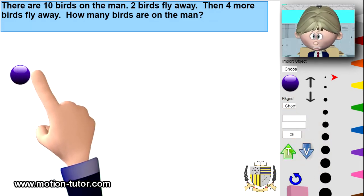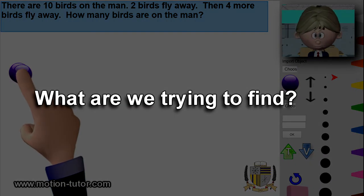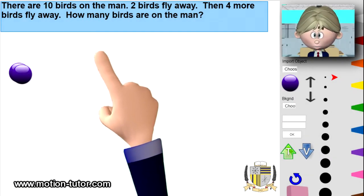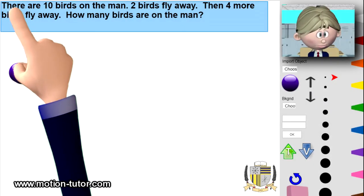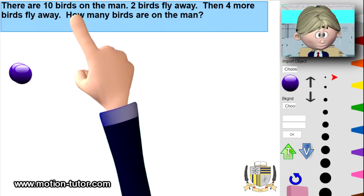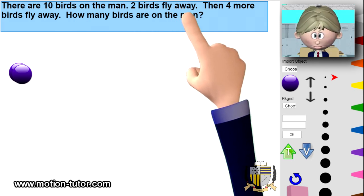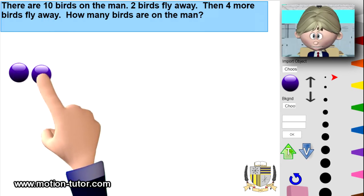Before using the counters, let's think about how to solve this. What are we trying to find? We're trying to find how many birds are still on the man. What information are we given to help us find this answer? There are ten birds on him, two fly away, then four more fly away.